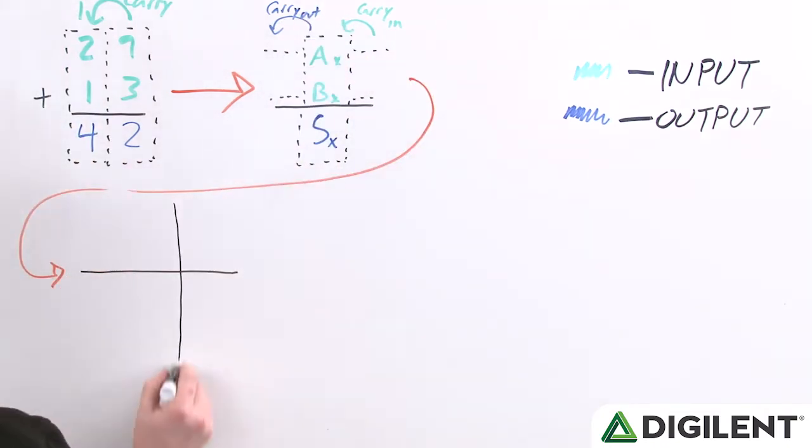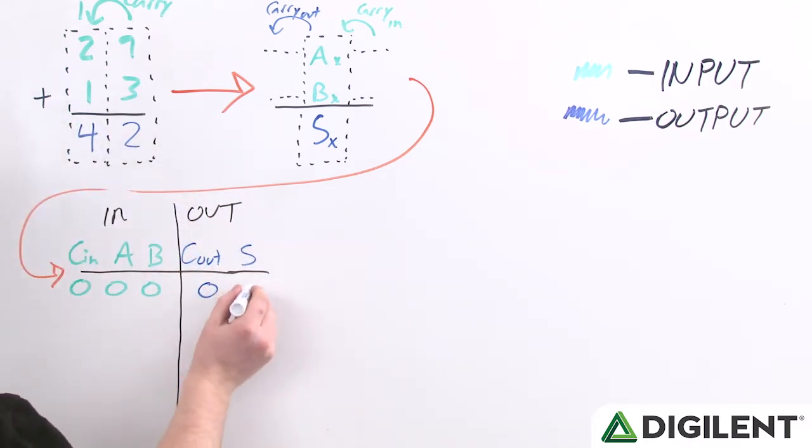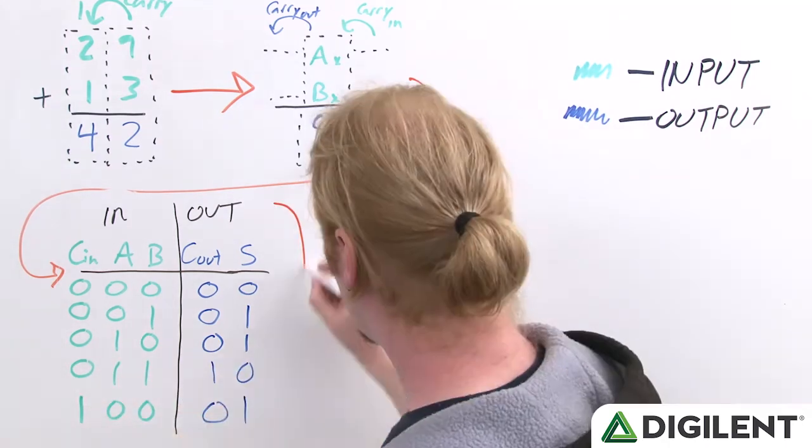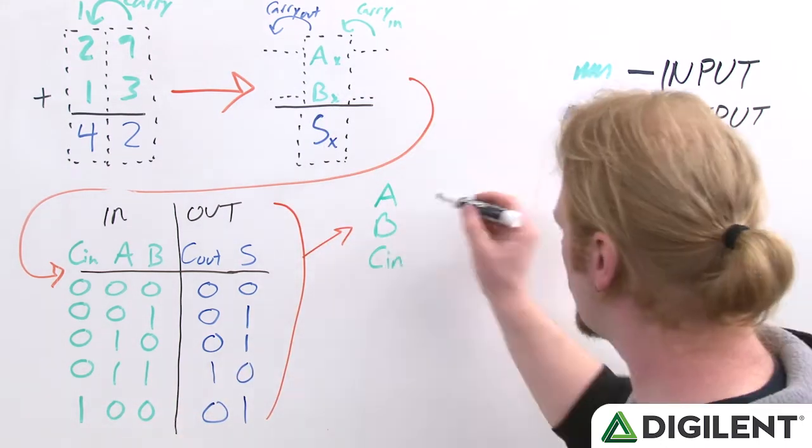With our inputs and outputs now accounted for, we can create a truth table to see how this operation plays out logically. Observe that we have two outputs that are dependent on our inputs in two different ways, which means that we need two different methods of determining their value.